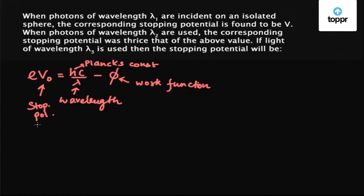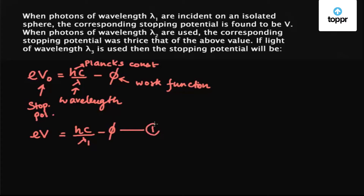In the first case, when wavelength lambda 1 is used, the stopping potential is V, so it is given by eV = hC/λ1 - φ. Let's name this equation number 1.